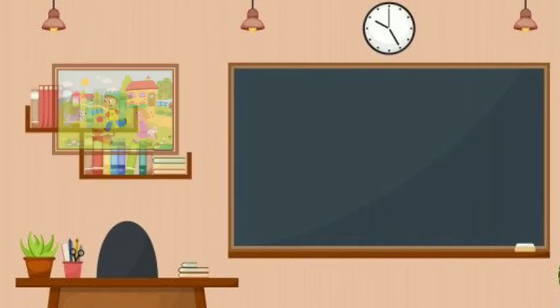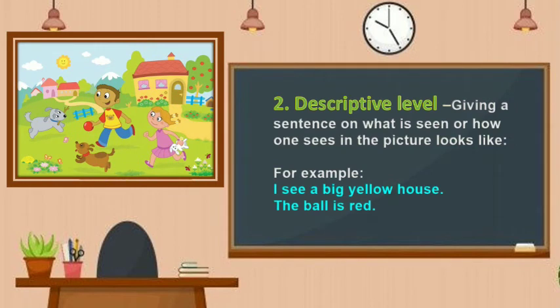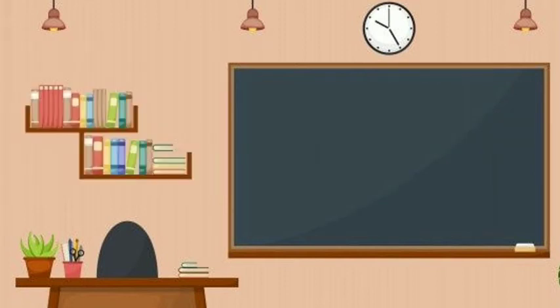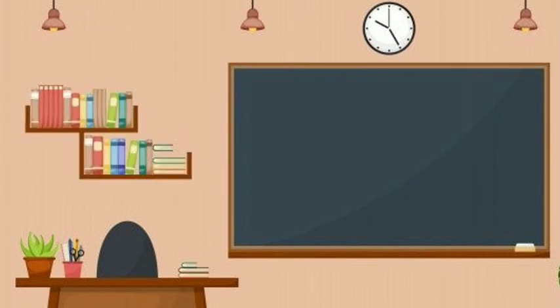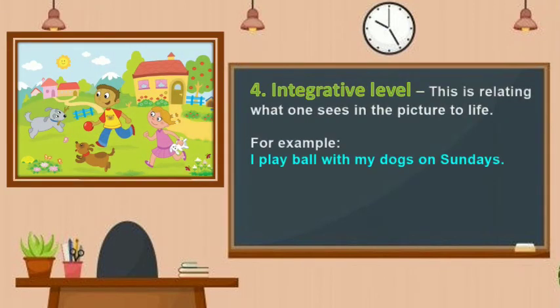Number two, descriptive level: giving a sentence on what is seen or how one sees in the picture. For example, 'I see a big yellow house.' 'The ball is red.' Number three, interpretive level: giving more meaningful sentences which are of inference type. For example, 'Tom is playing with his dog.' 'Anna is wearing her favorite dress.' Number four, integrative level: this is relating what one sees in the picture to life. For example, 'I play ball with my dogs on Sundays.'